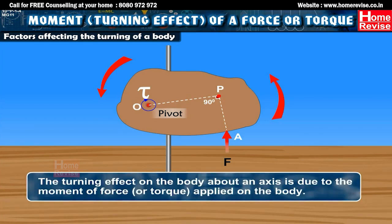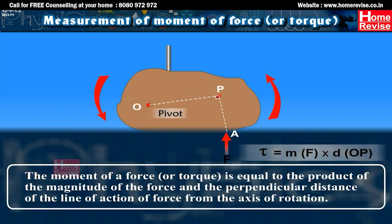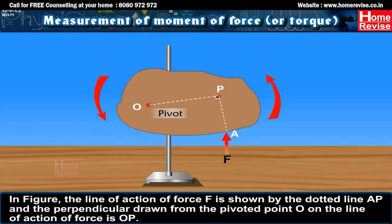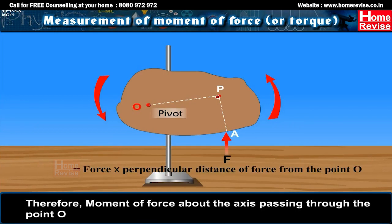In other words, the turning effect of the body about an axis is due to the moment of force or torque applied on the body. The moment of force or torque is equal to the product of the magnitude of the force and the perpendicular distance of the line of action of force from the axis of rotation. In the figure, the line of force is shown by the dotted line A-P and the perpendicular drawn from the pivoted point O on the line of action of force is O-P. Therefore, the moment of force about the axis passing through point O equals force multiplied by perpendicular distance from O, which equals F × O-P.